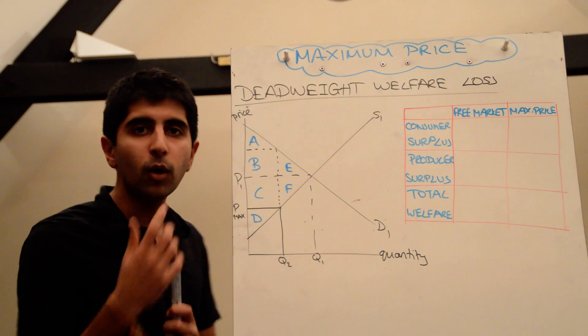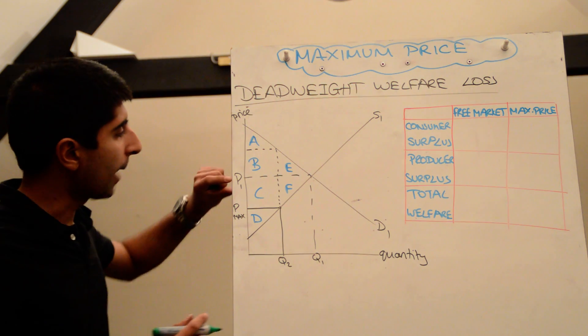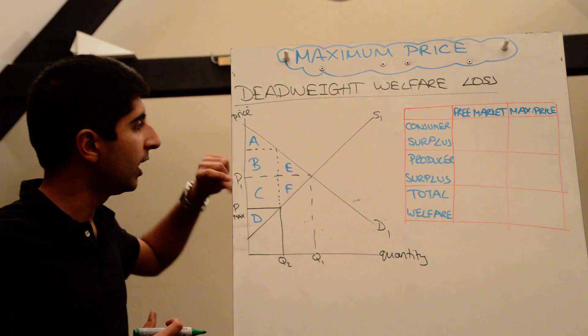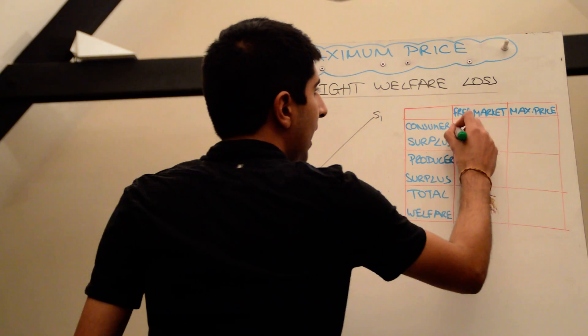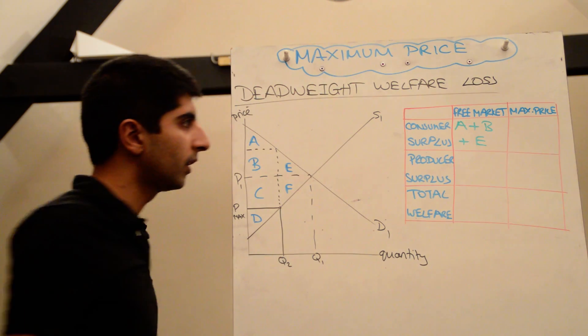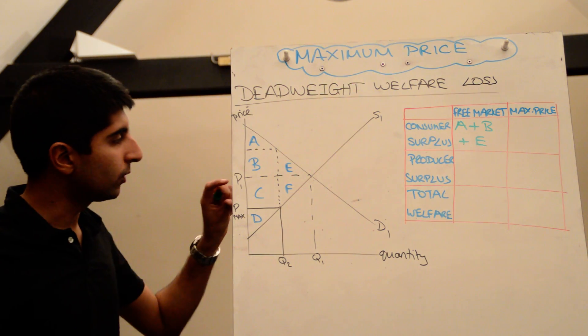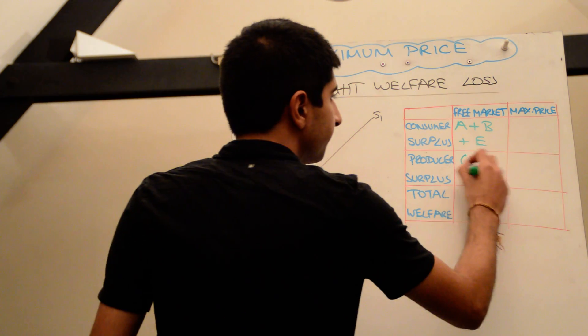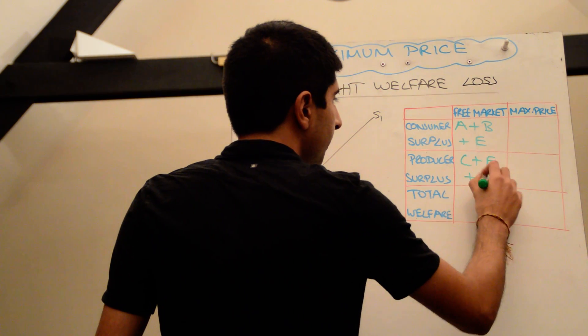Okay, so in the free market then, what was our consumer surplus? Well, at price P1 in the free market before our maximum price, consumer surplus was equal to A plus B plus E. Producer surplus was equal to C plus F plus D.